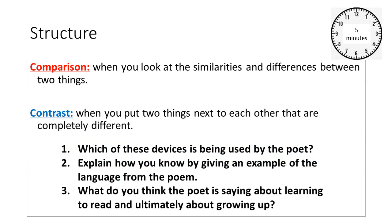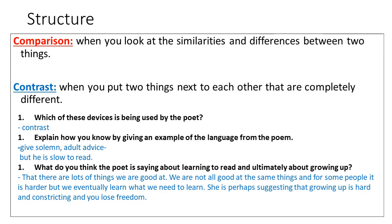Stretcher. Let's look at two key terms. Comparison is when you look at similarities and differences between two things. Contrast is when you put two things next to each other that are entirely different. Consider: which of these devices is being used by the poet? Explain how you know by giving an example of language from the poem. What do you think the poet is saying about learning to read and growing up? Pause the video for five minutes. It's contrast — for example, 'to give solemn adult advice, but he is slow to read.' The poet is saying there are lots of things the child is good at, and we are not all good at the same things. For some people it is harder, but we eventually learn what we need to learn. She is perhaps suggesting that growing up is hard and constricting, and you lose freedom.